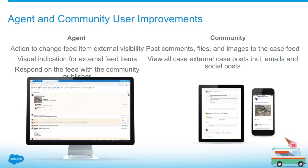Looking at the functionality we're introducing in Summer 15, we can put it into two buckets. The first is the agent side changes. On the agent side, we've added a new action to change the visibility of a Chatter post on a case — to determine whether it should be externally visible or internal only. There's also a new indication on feed items to show which are external and which are internal, so you can quickly scan the feed. And last is the ability to use the community publisher to post a feed item back to the case rather than a case comment.